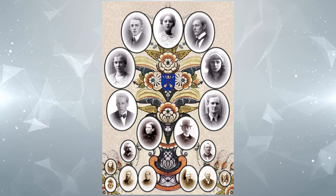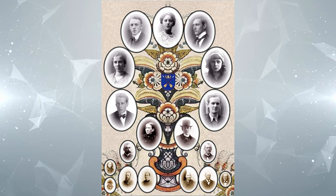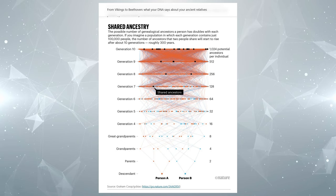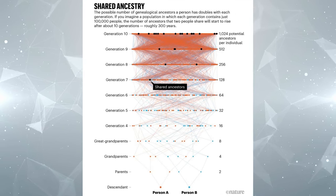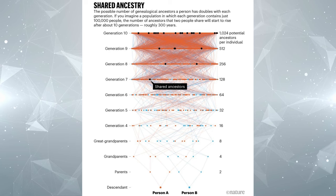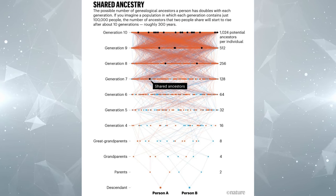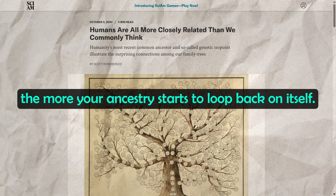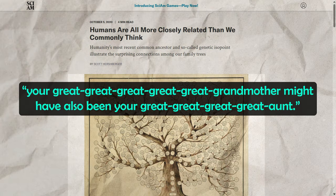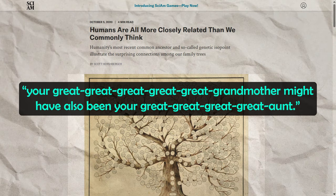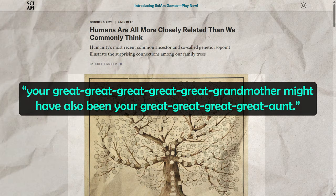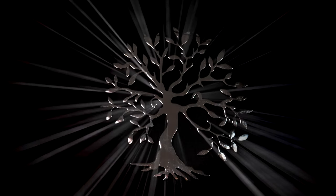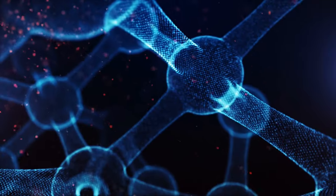The further back you go, you start to see things like cousins marrying, causing branches to collapse. People in every generation are also mating with people with shared common ancestors. As geneticist Adam Rutherford told Scientific American, the further back you go, the more your ancestry starts to look back on itself. For example, your great-great-great-great-great-grandmother might also have been your great-great-great-great-grandmother. Despite all this, you still have far more genealogical ancestors than genetic ancestors.